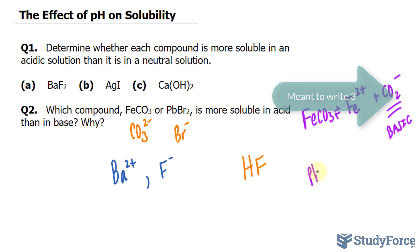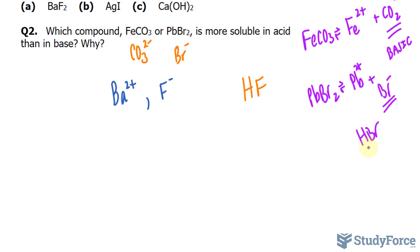Whereas PbBr2, if that's broken down, we end up with lead ions and bromide ions. This likely came from HBr, which is a strong acid, and if that's a strong acid, then you're going to have a pH-neutral anion. So this would be pH-neutral.